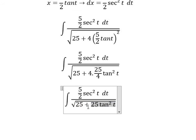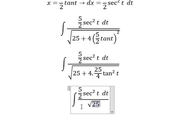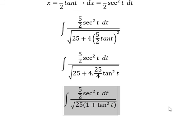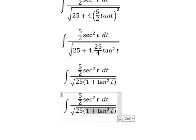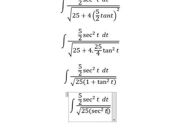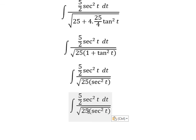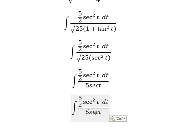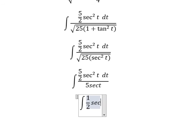After factorization, we change 1 plus tan squared t to secant squared t. The square root of 25 secant squared t equals 5 secant t. Now when we simplify 5 secant t with the numerator, we get one over two secant t dt.